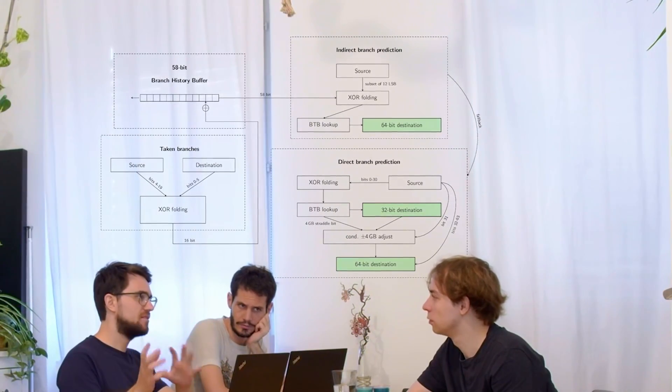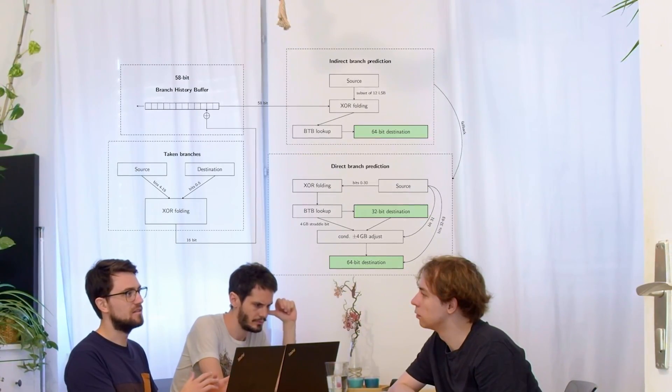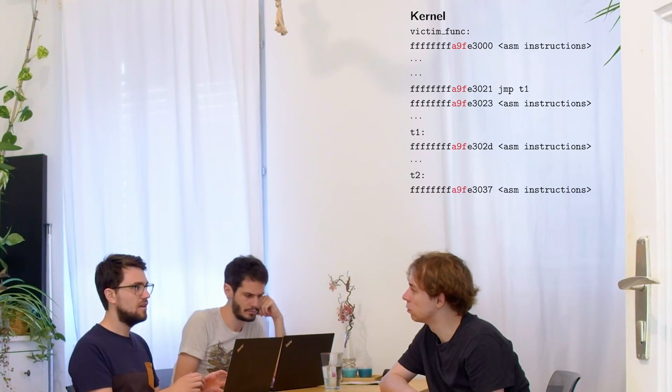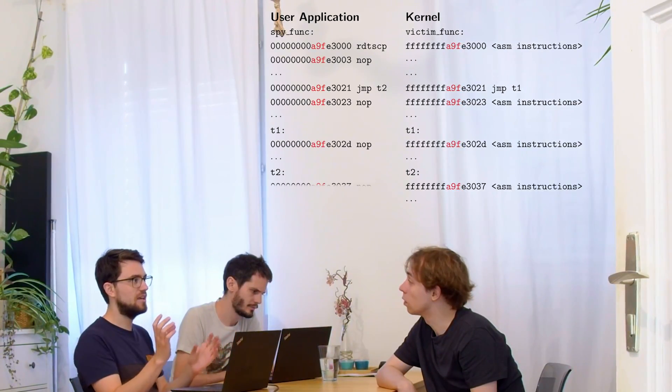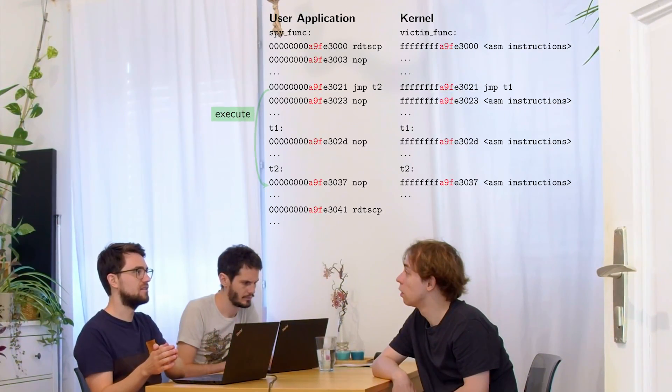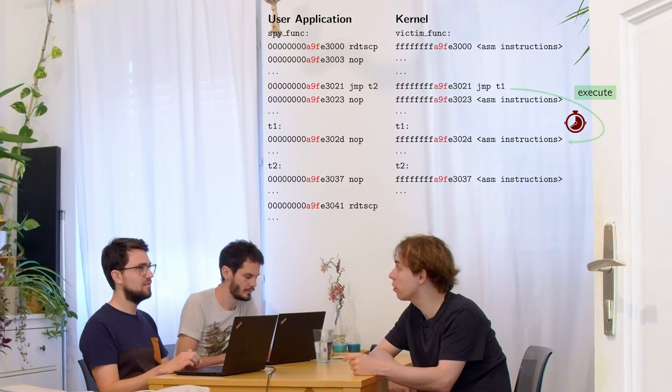So this branch predictor thing you said something about breaking KASLR with that? Yeah, the branch predictor takes some bits of the virtual address, scrambles it, and targets the branch target buffer. If these virtual address bits collide between kernel and user space branches, they influence each other. You get mispredictions in the kernel because user space mistrained it.